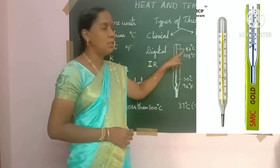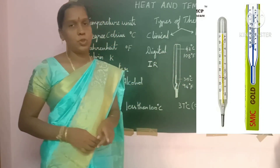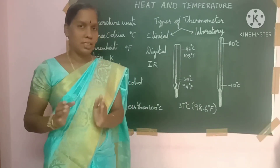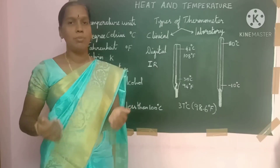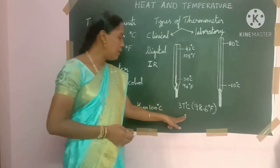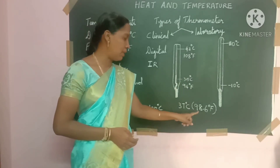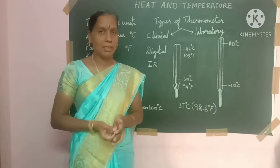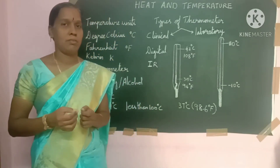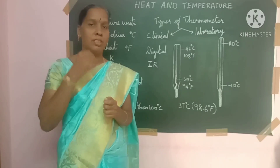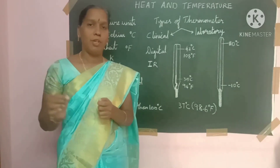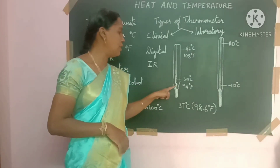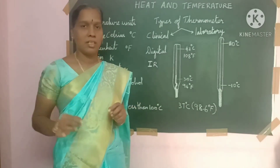The clinical thermometer has lower and upper fixed points. It is marked between 35 and 42 degrees centigrade. The normal human body temperature is 37 degrees centigrade, which equals 98.6 degrees Fahrenheit.